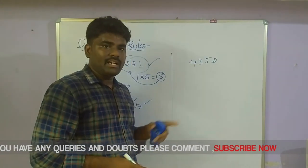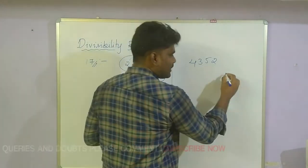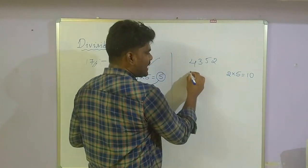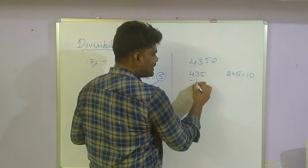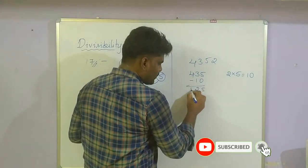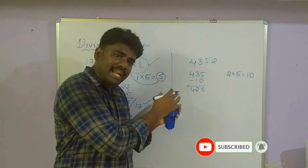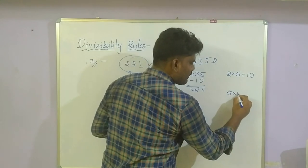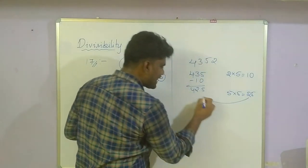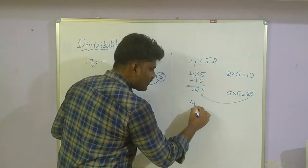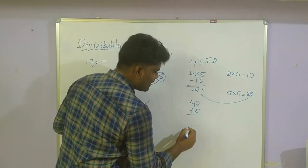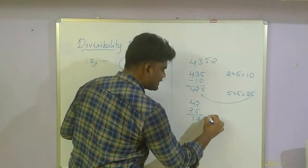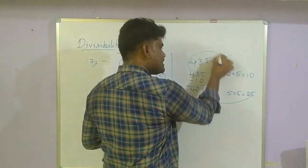One more example for rule 17. Take the units place: 2. Multiply by 5: 2 × 5 = 10. Subtract 10 from the remaining digits: 435 minus 10 = 425. Again take the units place: 5 × 5 = 25. Subtract 25 from the remaining: 42 minus 25 = 17. 17 is divisible by 17, so the entire number is divisible by 17.